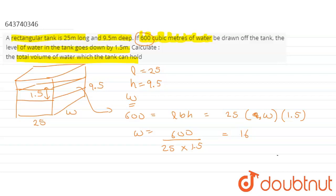So here we can write the volume of tank equals L×B×H, where height is the full height of tank, that is 9.5. So length was 25 given, width is 16, and height was 9.5, which equals 3800 meter cube. This is our answer for this question.